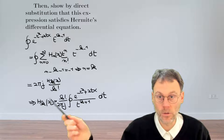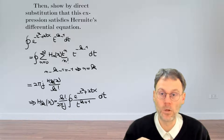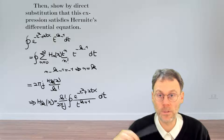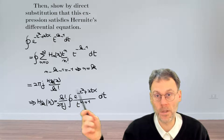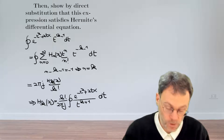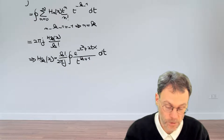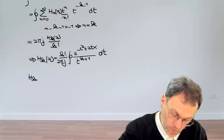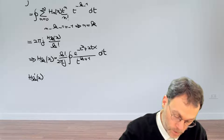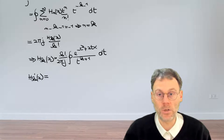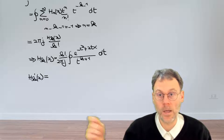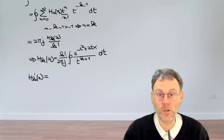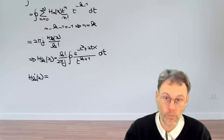Now we have our integral representation of the Hermite polynomial of order k. Let's see what happens when we substitute this directly into the differential equation for Hermite polynomials. For that we need to calculate H_k prime and H_k double prime. Pause the video, calculate the two derivatives, substitute them into the differential equation, and hopefully you end up with zero.